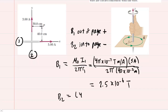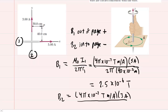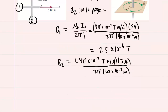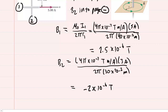Let's set up B2 in a similar manner. We take the constant 4π times 10 to the minus 7, multiply that by the current running through wire 2, which was 3 amps, then divide by 2π times the distance from wire number 2 to the point — 30 centimeters, converting to 30 times 10 to the minus 2 meters. When we compute this, B2 is 2 times 10 to the minus 6 tesla. Since B2 was into the page and negative, we assign a negative to it.